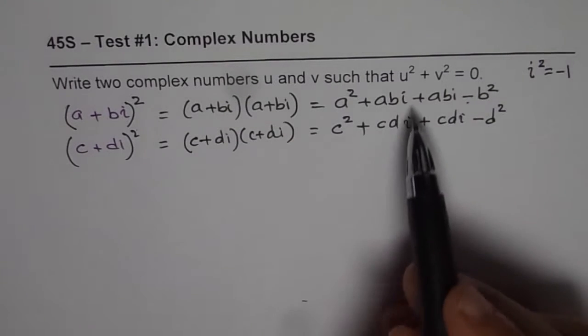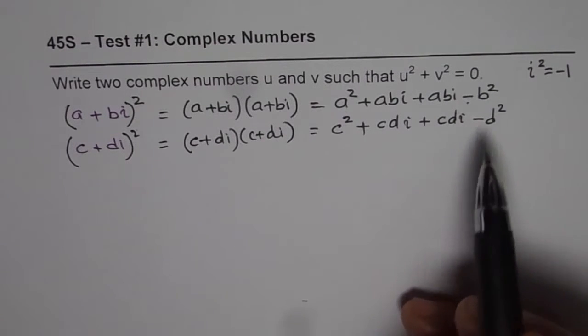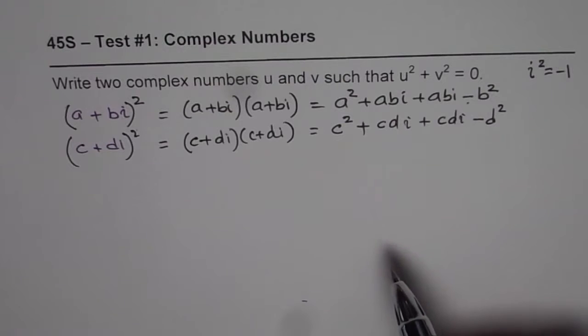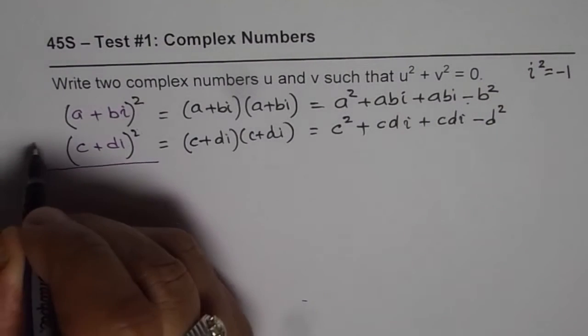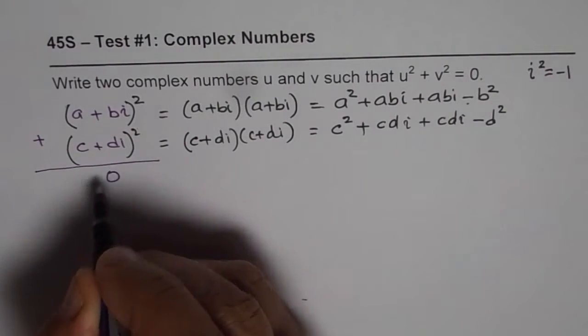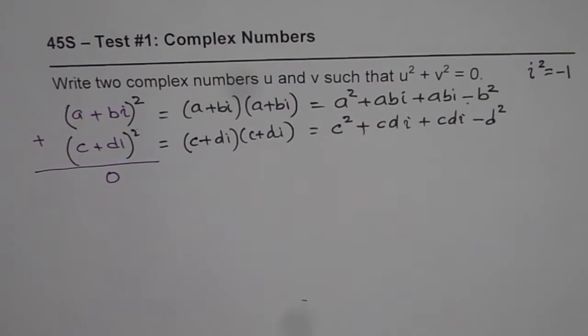Now, the question is, when you add these two, when you add these two, you should get zero. That is the question. If I add these two, I should get zero. How to find these two?